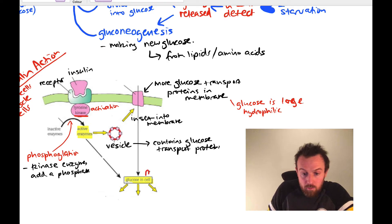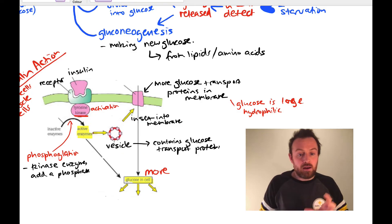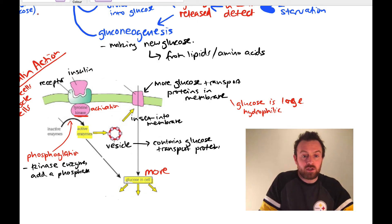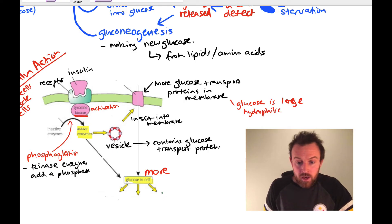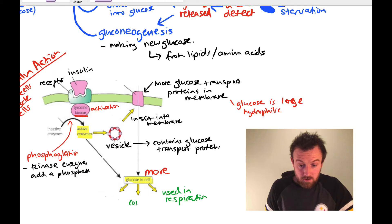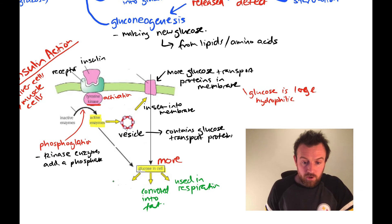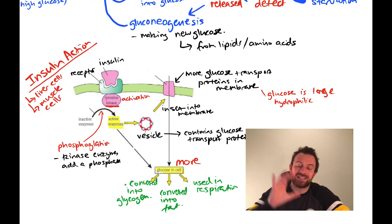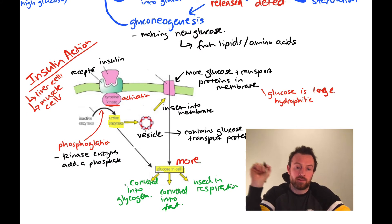The tyrosine kinase and active enzymes also cause glucose to be used in respiration, converted into fat, or converted into glycogen. That covers insulin action inside a liver or muscle cell.